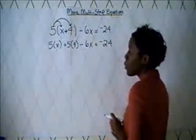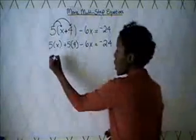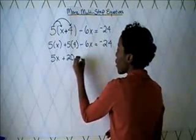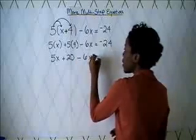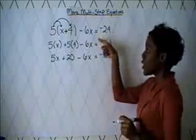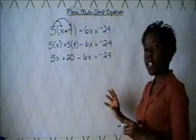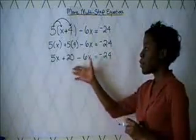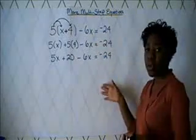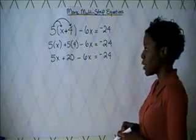Of course, order of operations says we're going to do multiplication. So we have 5x plus 20 minus 6x is equal to negative 24. Notice that I brought down my equal sign through each and every step. It's very important, especially for a multi-step equation where you have to do a couple of things on one side or even on both sides. You want the equal sign to be aligned so you know what you're doing and everything is aligned correctly.